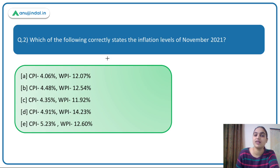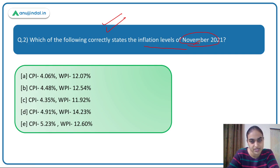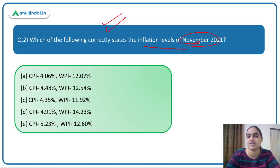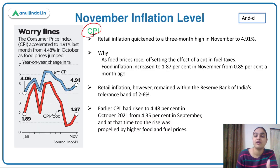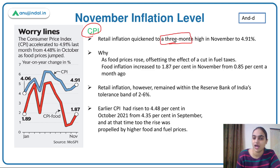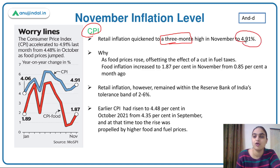The second question asks: which of the following correctly states the inflation levels for November 2021? For every month the inflation data is released, and now the data for November is out. We need to identify which option correctly states both CPI and WPI inflation levels for November. The retail level inflation — assessed through the Consumer Price Index — quickened to a three-month high, reaching 4.91 percent in November.